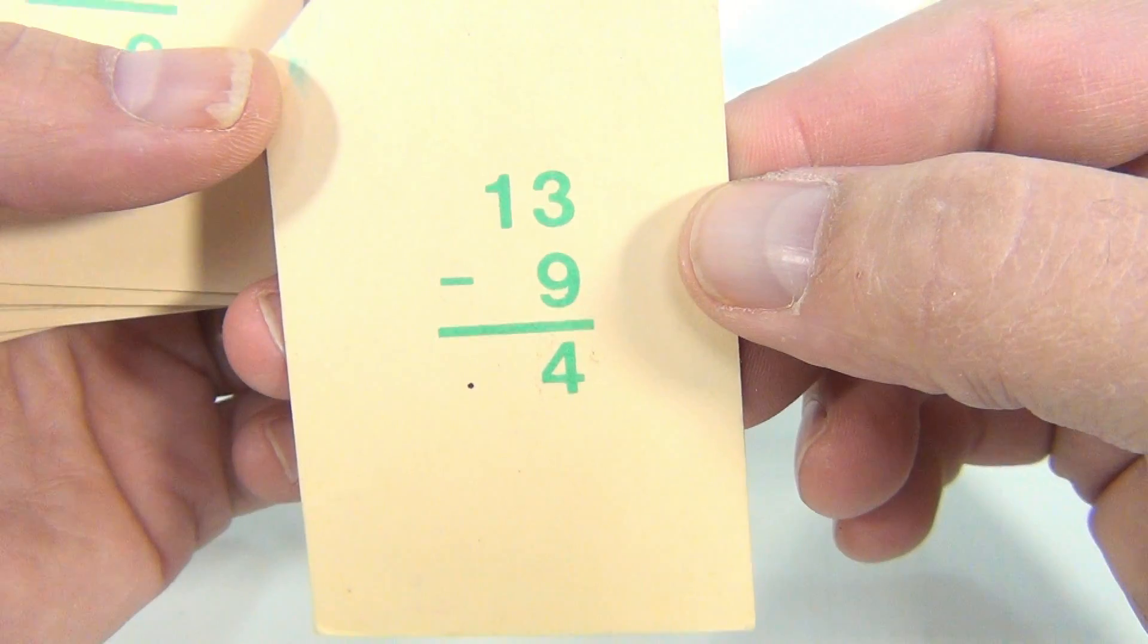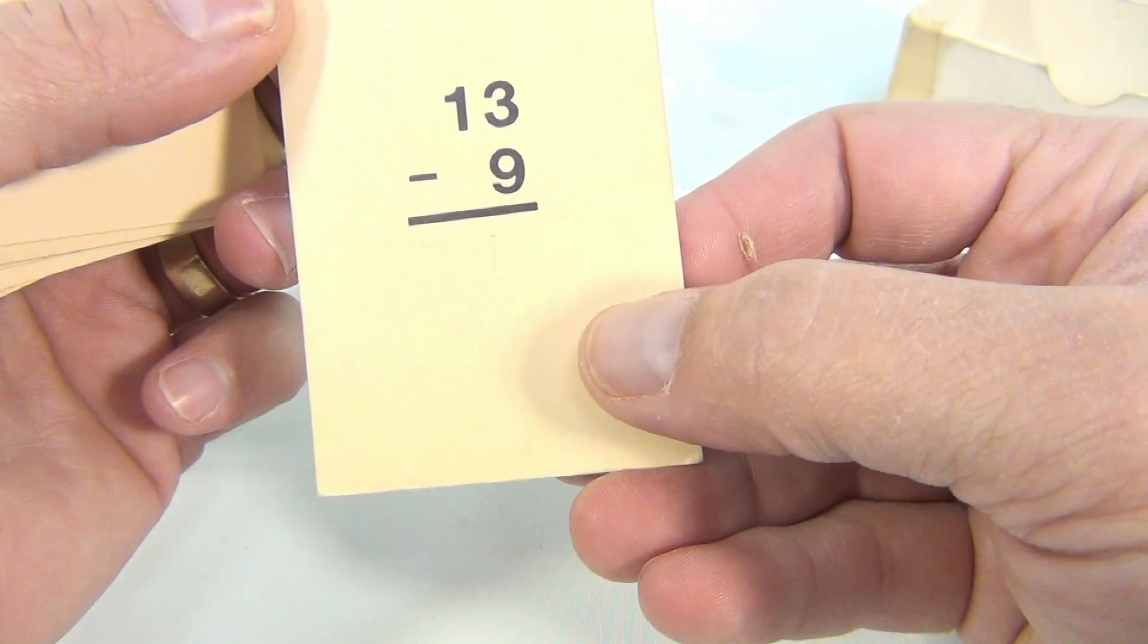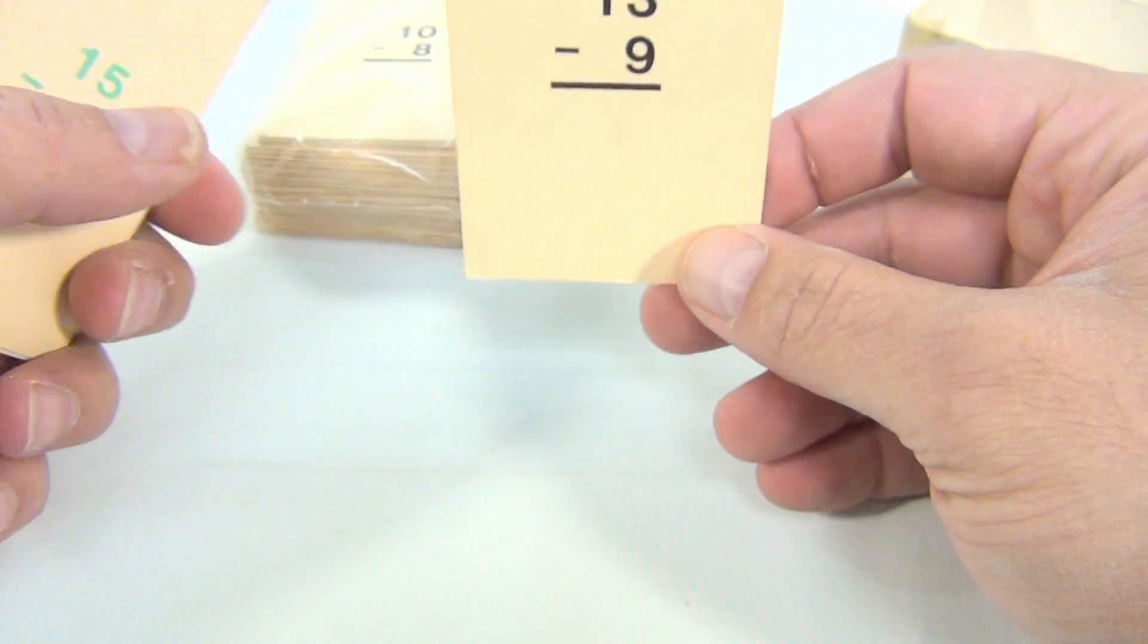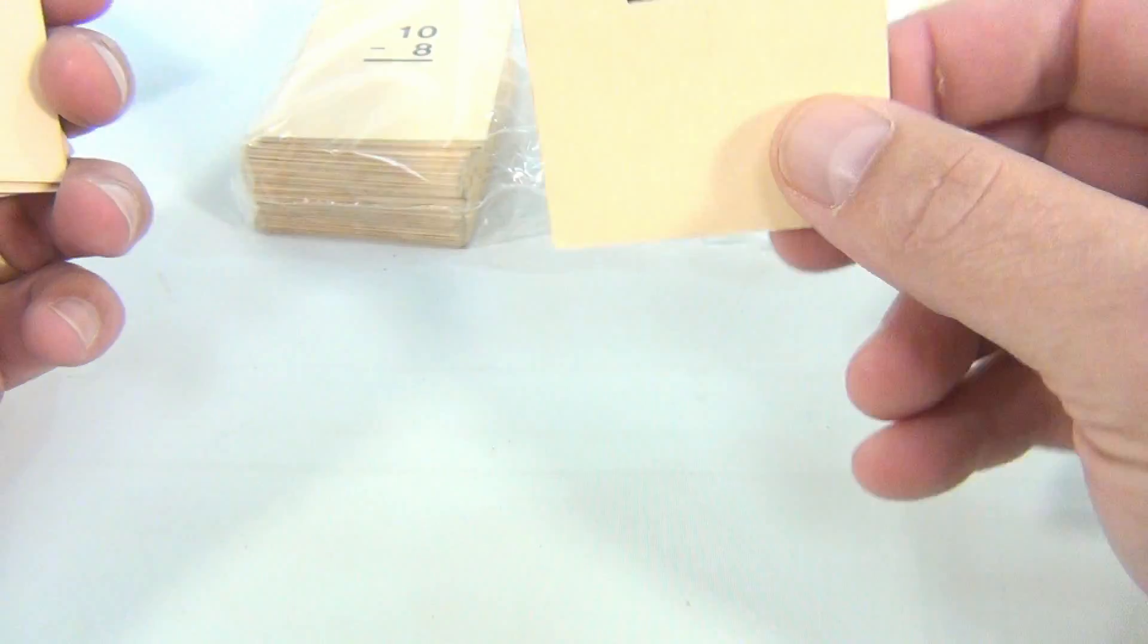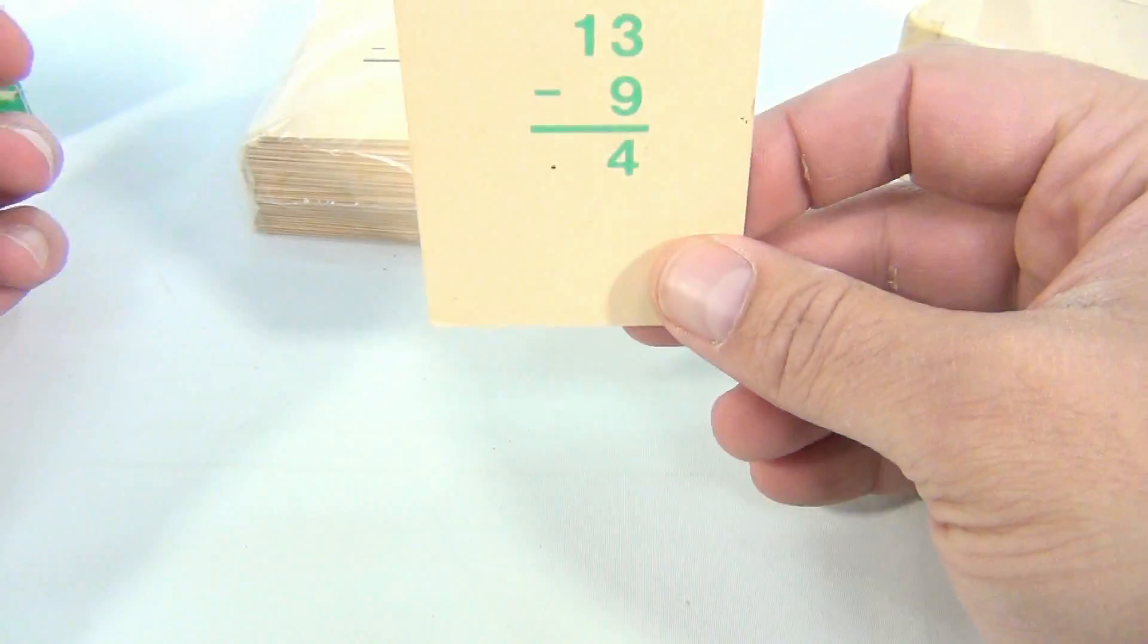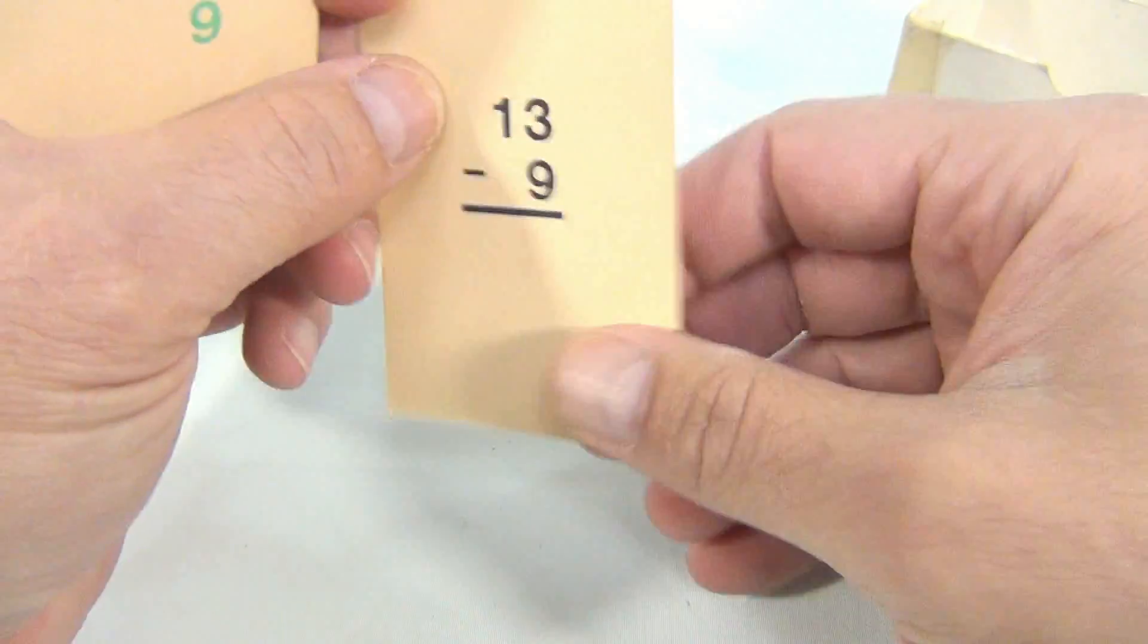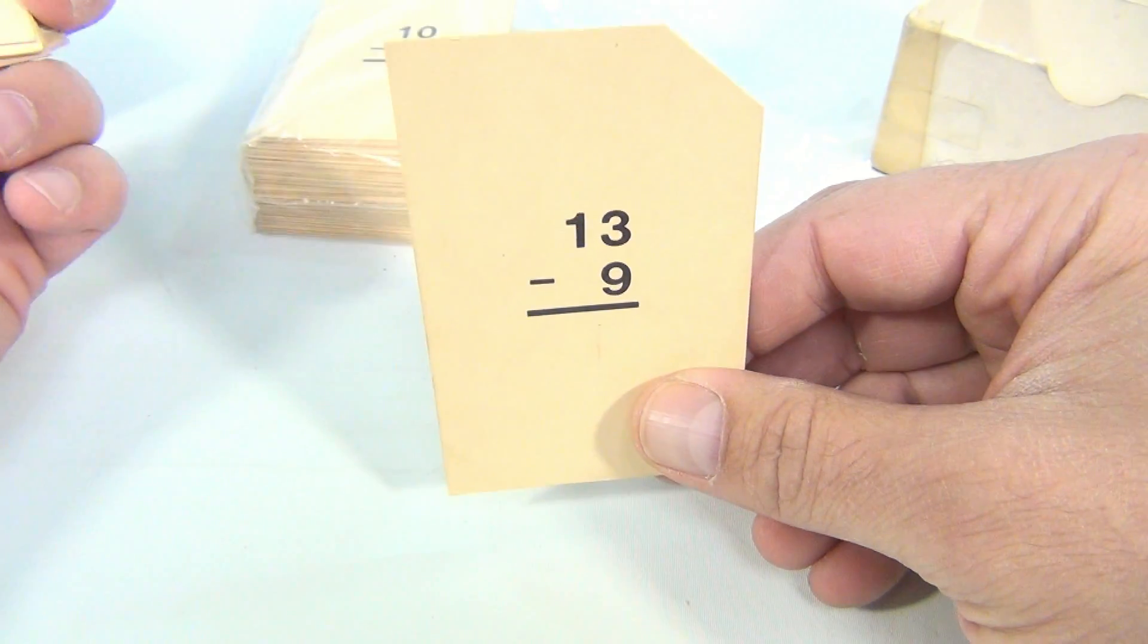So you're doing 13 minus 9 on this side and then 13 minus 9. So you're holding up the flash card and you're saying what's 13 minus 9? Oh sorry, wait, yeah, this is for you. I'm on that side. Really, I have the answer. You got to give me the answer.